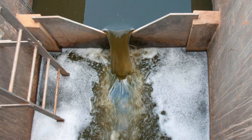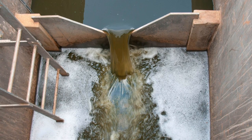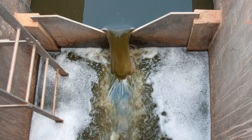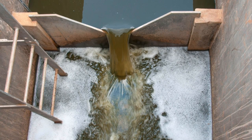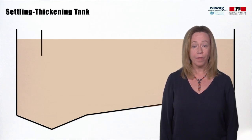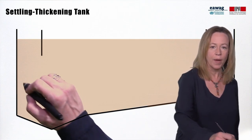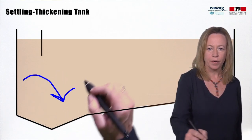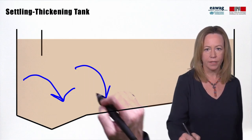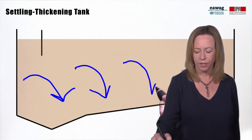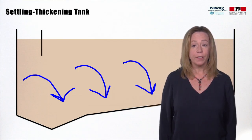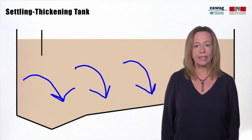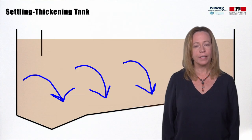Gravity is probably the most commonly employed method of liquid-solid separation for the separation of suspended particles and unbound water. Particles that are heavier than water settle out under quiescing conditions at rates based on size of particles, suspended solids concentrations, and flocculation. These are the basic fundamentals used in the design of settling thickening tanks and grit and sand chambers.